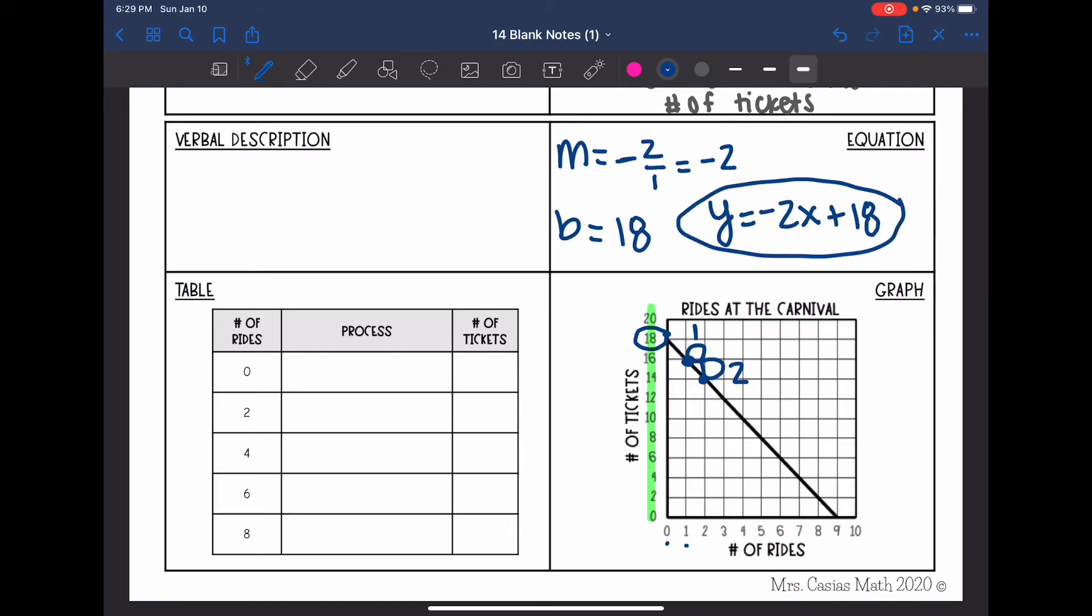Let's think about what this means in the context of this situation and write our verbal description. The title of this graph is Rides at a Carnival. So we are talking about the number of rides and the number of tickets, and the number of rides is on the x-axis. So that's what I'm going to input and that's going to determine the number of tickets. So this person must have started out with 18 tickets.